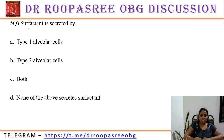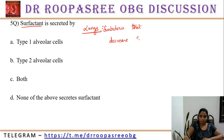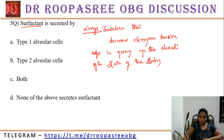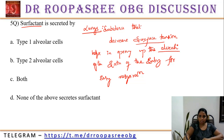Surfactant is produced by the lungs. Surfactant is a substance that decreases surface tension, which helps in opening up the alveoli for easy respiration after birth of the baby. It is produced by type 2 alveolar cells.